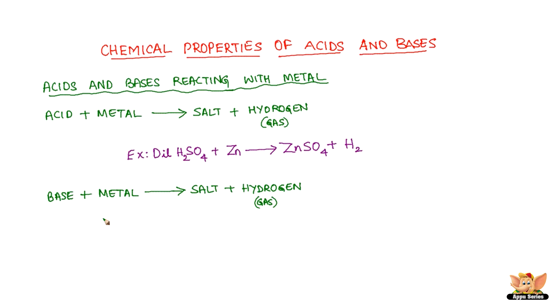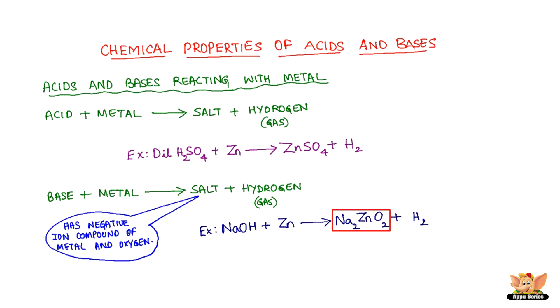Bases react with metals too. The products of such a reaction are a salt having negative ion compound of metal and oxygen and hydrogen gas. Sodium hydroxide, a base, reacts with metal zinc to form sodium zincate and hydrogen.